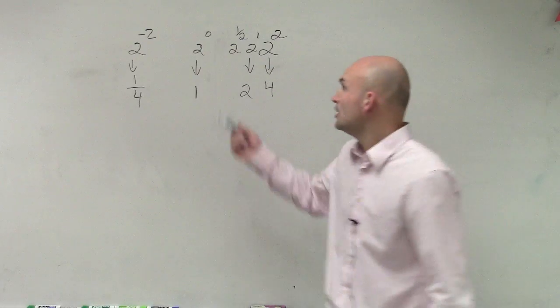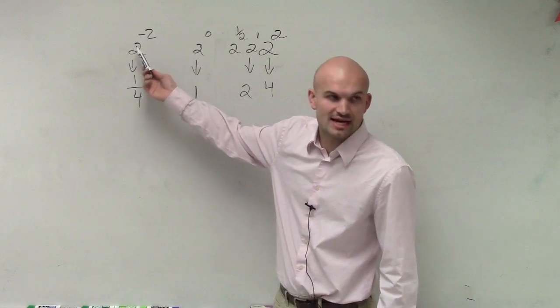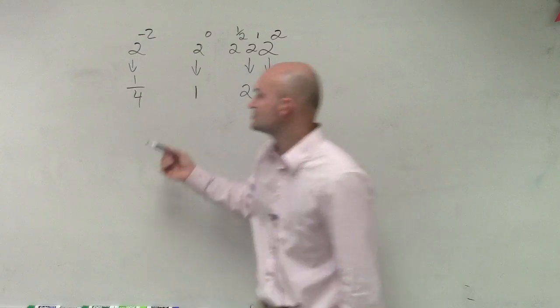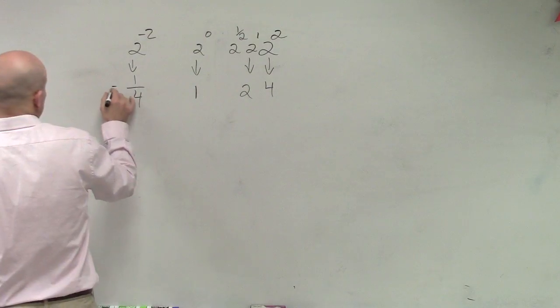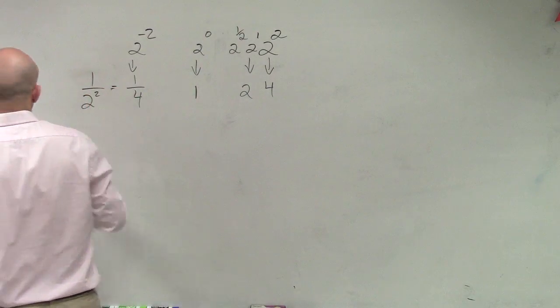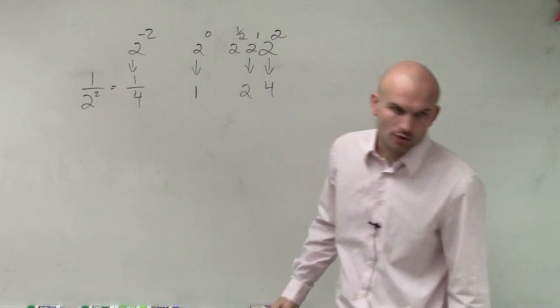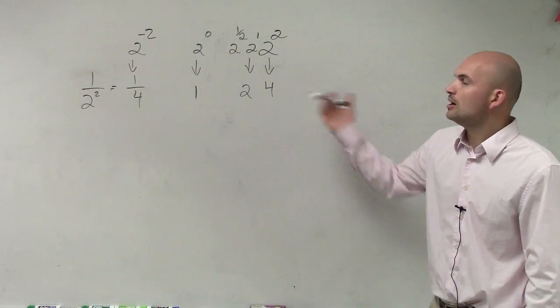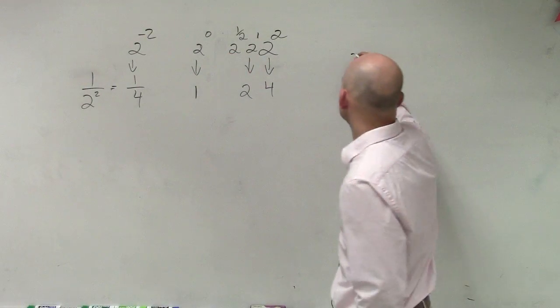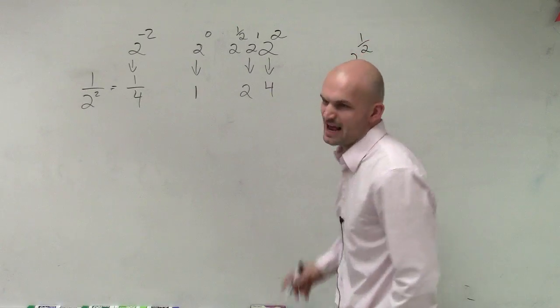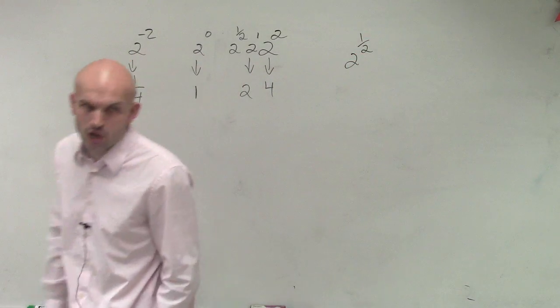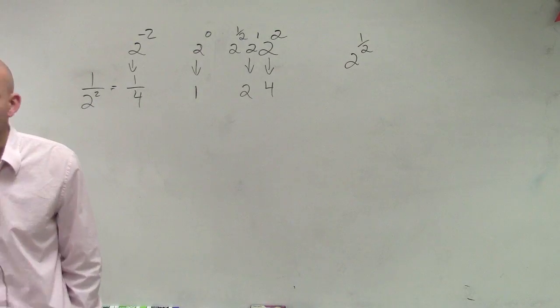That's going to be 2 to the 1 half power. That's the same thing as 1 over 2 squared. We know that 2 to the 0 power equals 1. But what is going to deal with when we have 2 to the 1 half power? So what I want to do to talk about this is let's do a little operation.